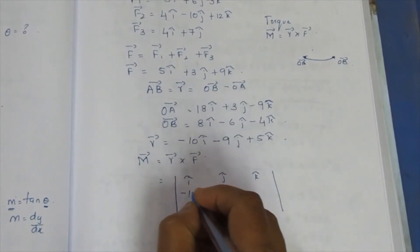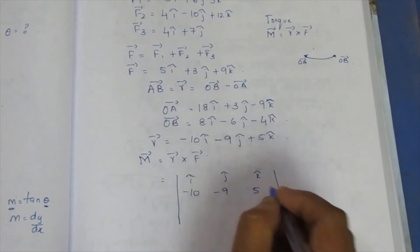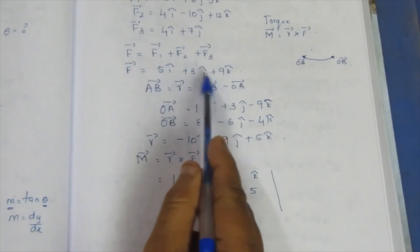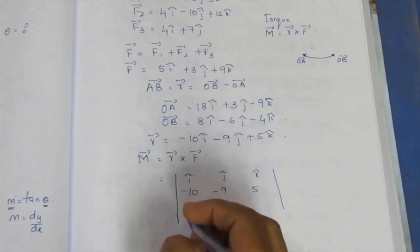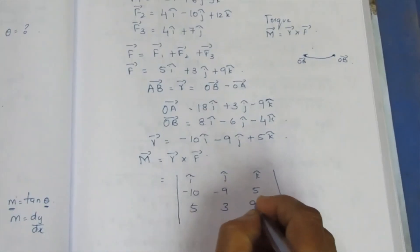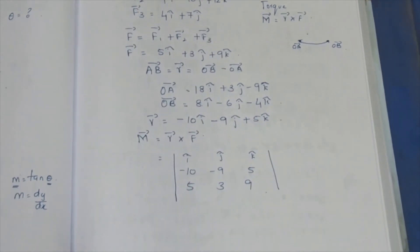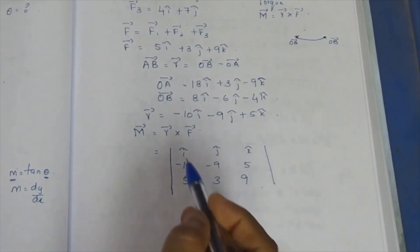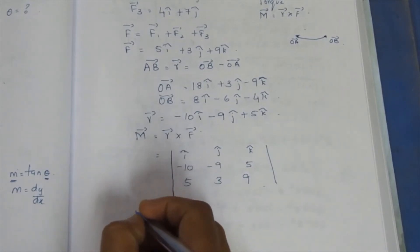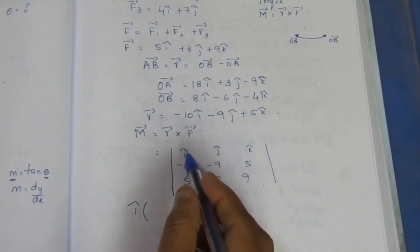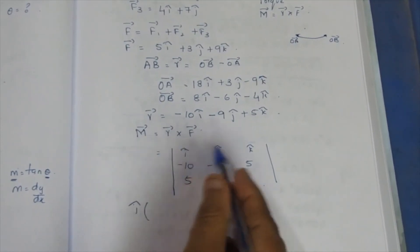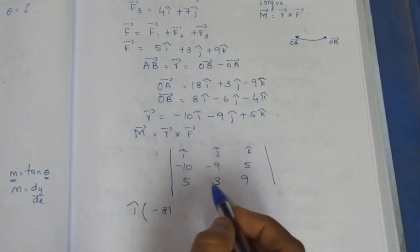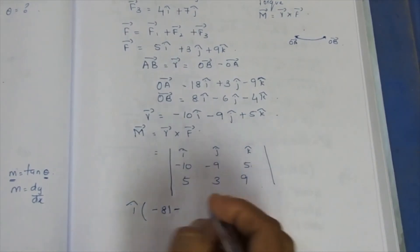So R-vector is minus 10i, minus 9j, plus 5k. F-vector is minus 5i, 3j, 9k. The cross product is determined by a determinant. We expand the determinant — expanding along row 1. For i-cap: row and column multiply gives minus 81 minus 4, and 5 times 3 is 15.